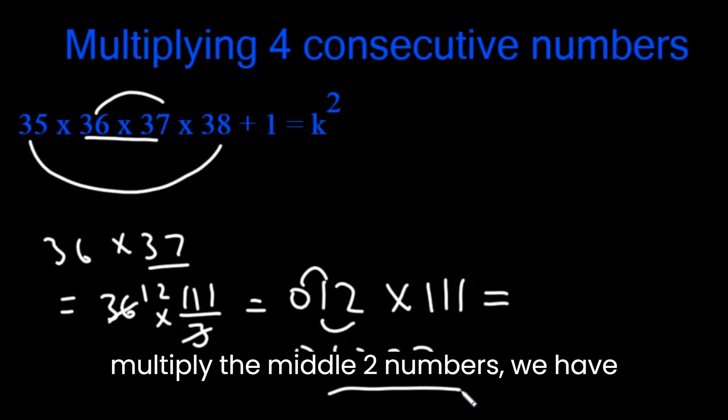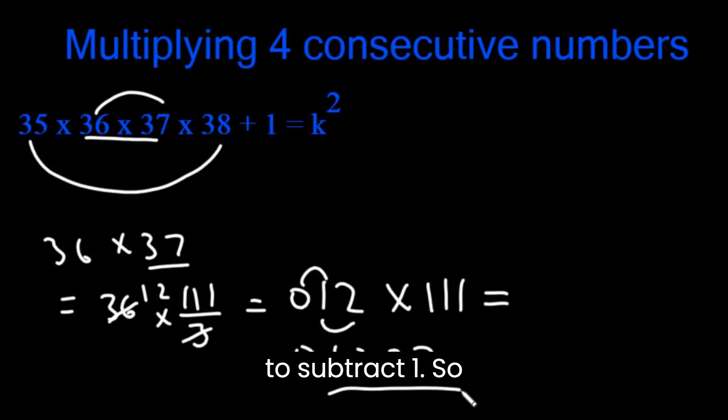And if we multiply the middle two numbers, we have to subtract 1. So let's subtract 1. This will be 1331. So this is our k.